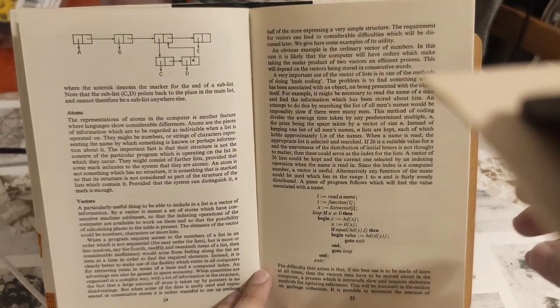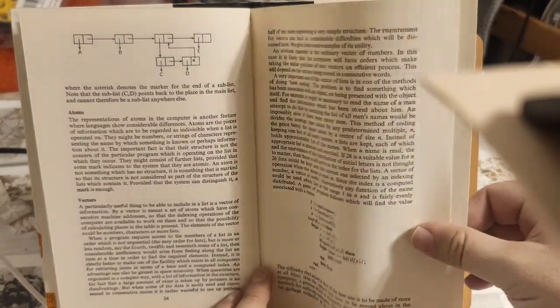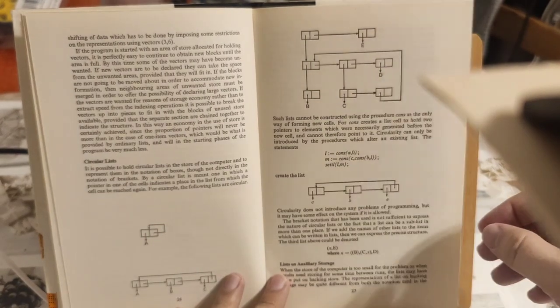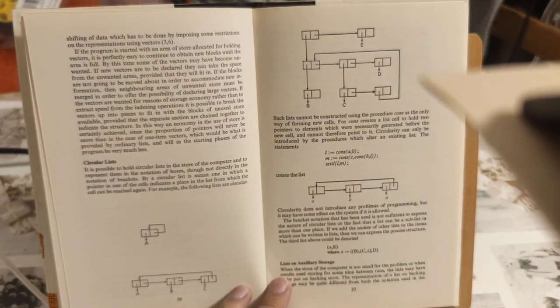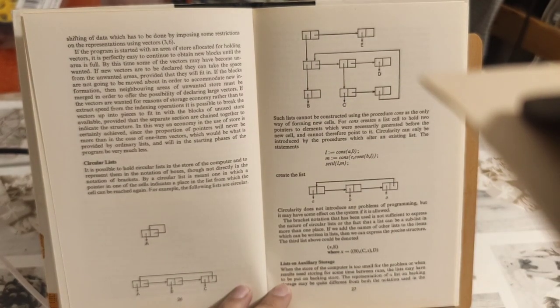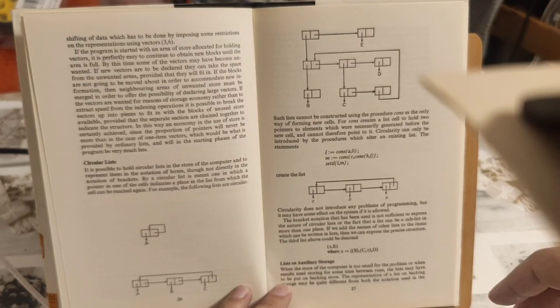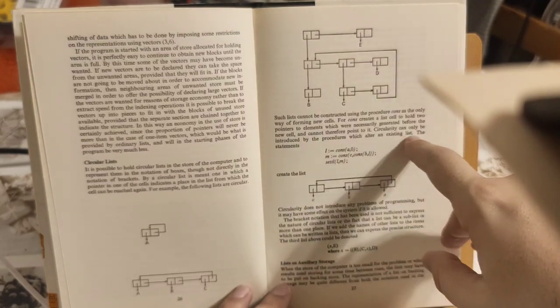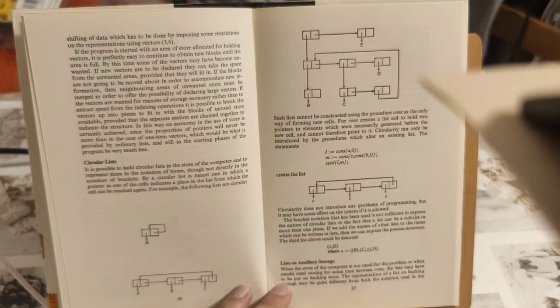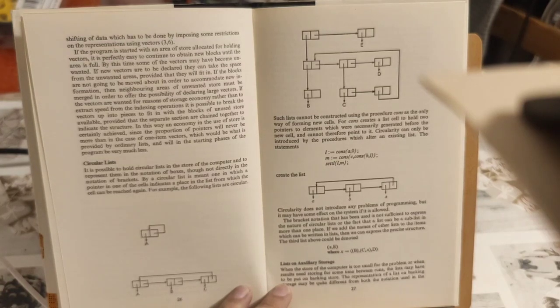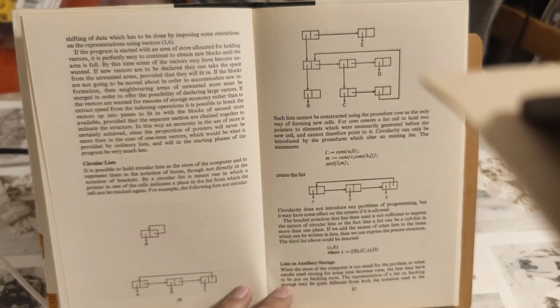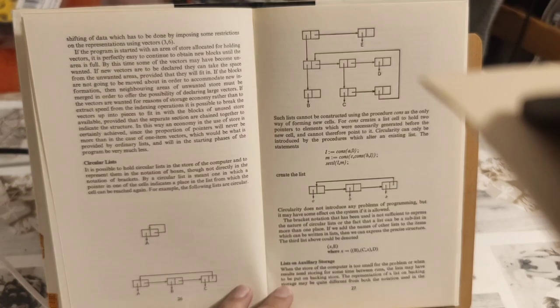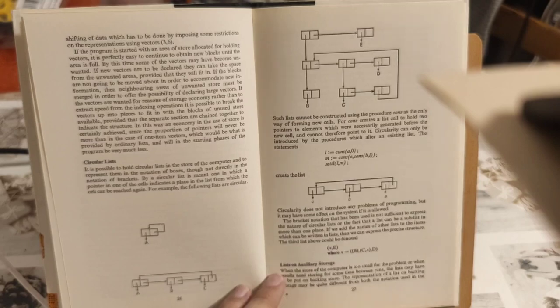Then he goes on to present circular lists. And he mentions something really interesting, namely that circular lists can only be created by procedures which alter an existing list. Like you have to have a normal list which then decided to turn somehow into something circular.